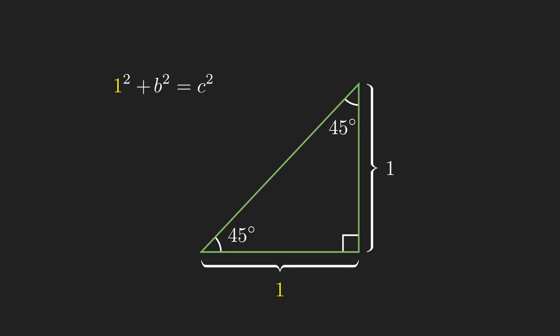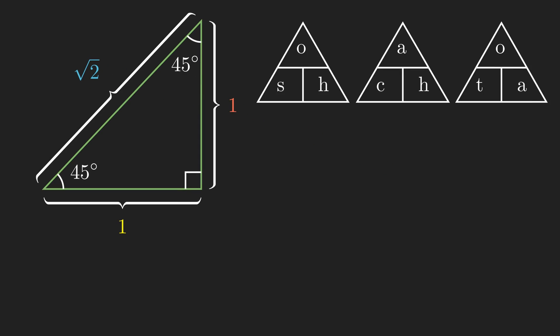Now, we use the Pythagorean theorem to find the hypotenuse of this triangle. One squared plus one squared is two, so the hypotenuse has the length square root of two. Now we can recall our SOHCAHTOA relationships and find the result of each function for an angle of 45 degrees.